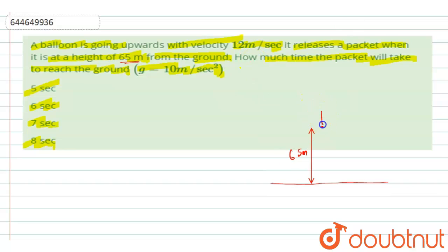So let's say at this height of 65 meters from the ground, this balloon is having a velocity 12 meter per second, and from here it has dropped the packet. See, the packet initially before it has been dropped would be moving in the upward direction with this velocity only, with 12 meter per second only.